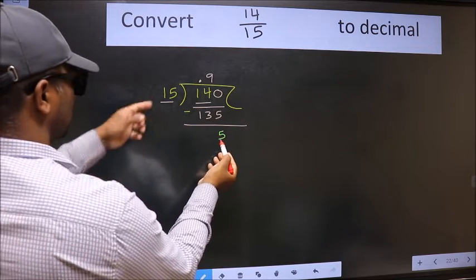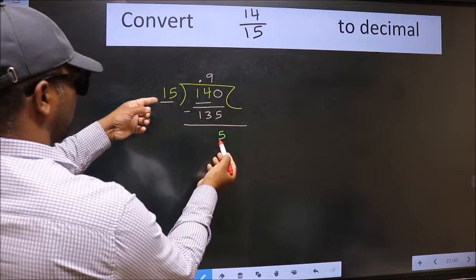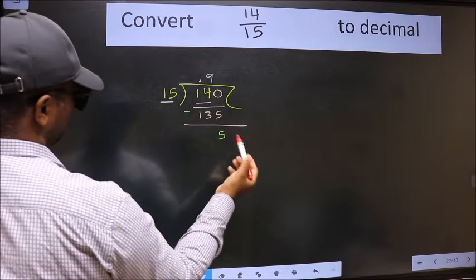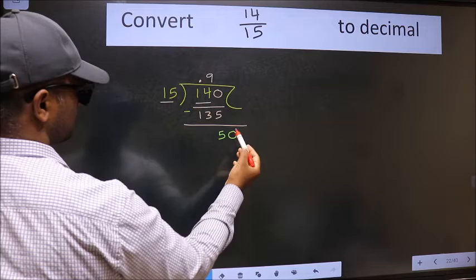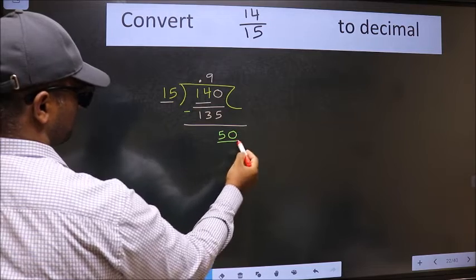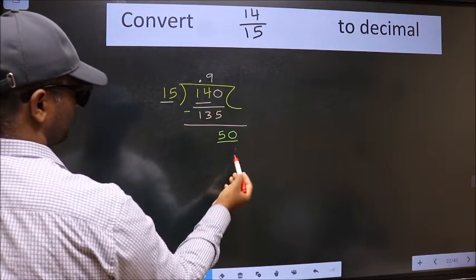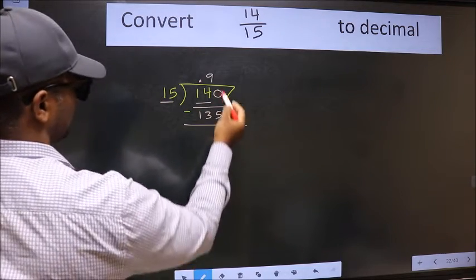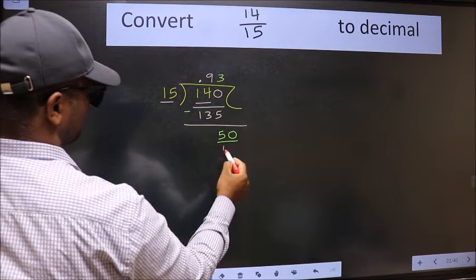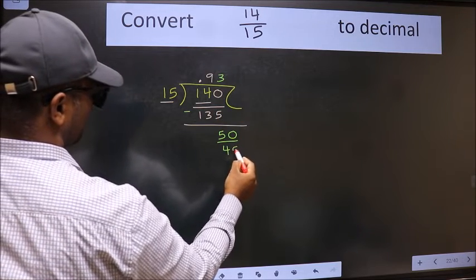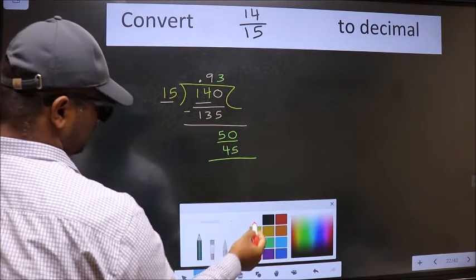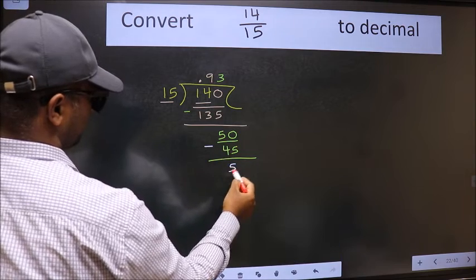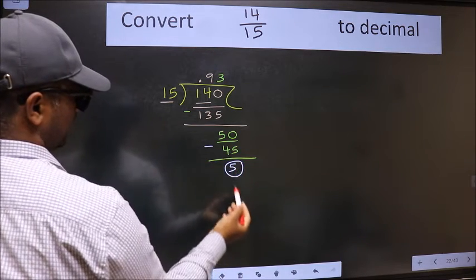5 is smaller than 15 and we already have the decimal, so this time we can directly take 0, making it 50. A number close in the 15 times table is 15 threes, which is 45. Now we subtract and we get 5 again.